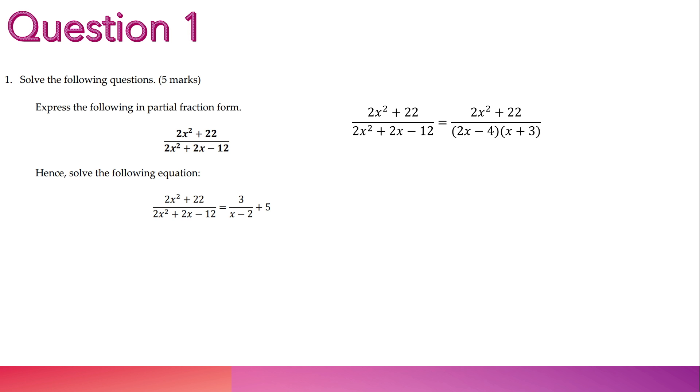So first, we write it down. And then, use the bottom equation and factorize it, making it 2x minus 4 times x plus 3. Next, we write this, express it this way, and times 2x minus 4 times x plus 3. And then, you will get this.